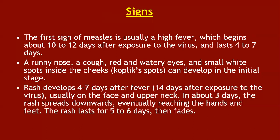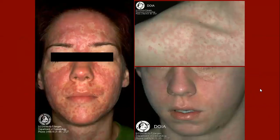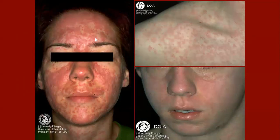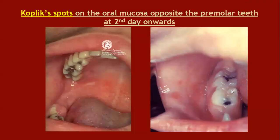The rash develops four to seven days after the fever, or 14 days after exposure to the virus. It begins on the face and upper neck; over about three days the rash spreads downwards, eventually reaching the hands and feet. The rash lasts about five to six days and then fades. This is a typical maculopapular rash of measles seen on the face as well as on the trunk. Koplik spots are small white specks seen in the oral mucosa opposite the premolar teeth.